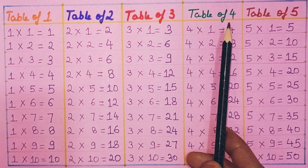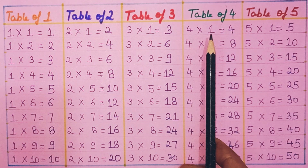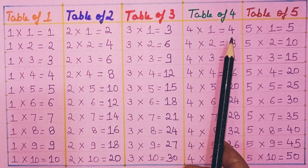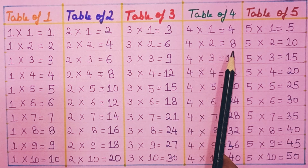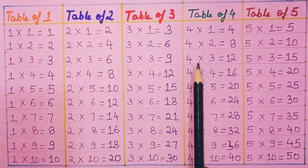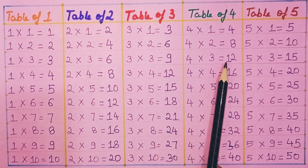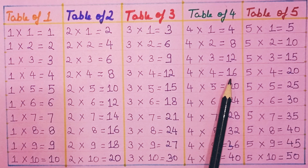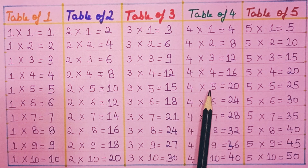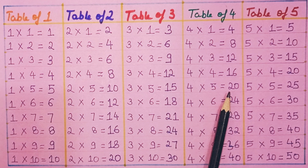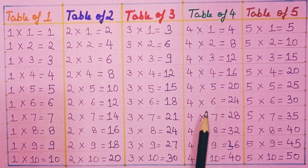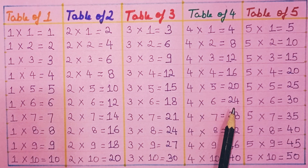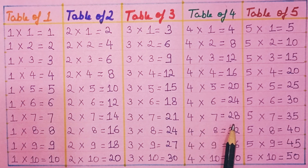Table of Four. Four ones are four. Four twos are eight. Four threes are twelve. Four fours are sixteen. Four fives are twenty. Four sixes are twenty-four. Four sevens are twenty-eight.